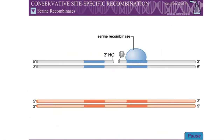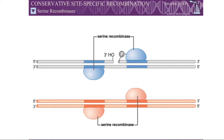Site-specific recombination always occurs between two recombination sites. Therefore, during recombination, four single strands of DNA — two from each recombination site — must be cleaved and rejoined. The serine recombinases cleave all four strands prior to strand exchange, with one recombinase protein molecule acting on each strand.